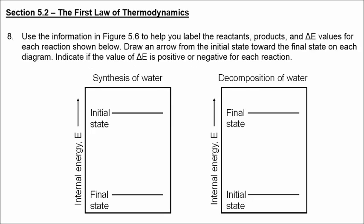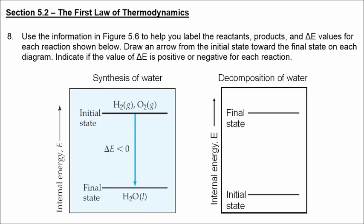For figure 5.6, they show the synthesis of water. The initial state is hydrogen gas and oxygen gas, and you end with liquid water. The down arrow implies energy is being lost to the surroundings, and delta E is negative. For the decomposition of water, the initial state would be liquid water, the final state would be hydrogen gas and oxygen gas, the arrow would be up, and instead of losing energy we are gaining energy from the surroundings — this would be electrolysis of water, where you supply energy in the form of electricity to split the water into its elements.